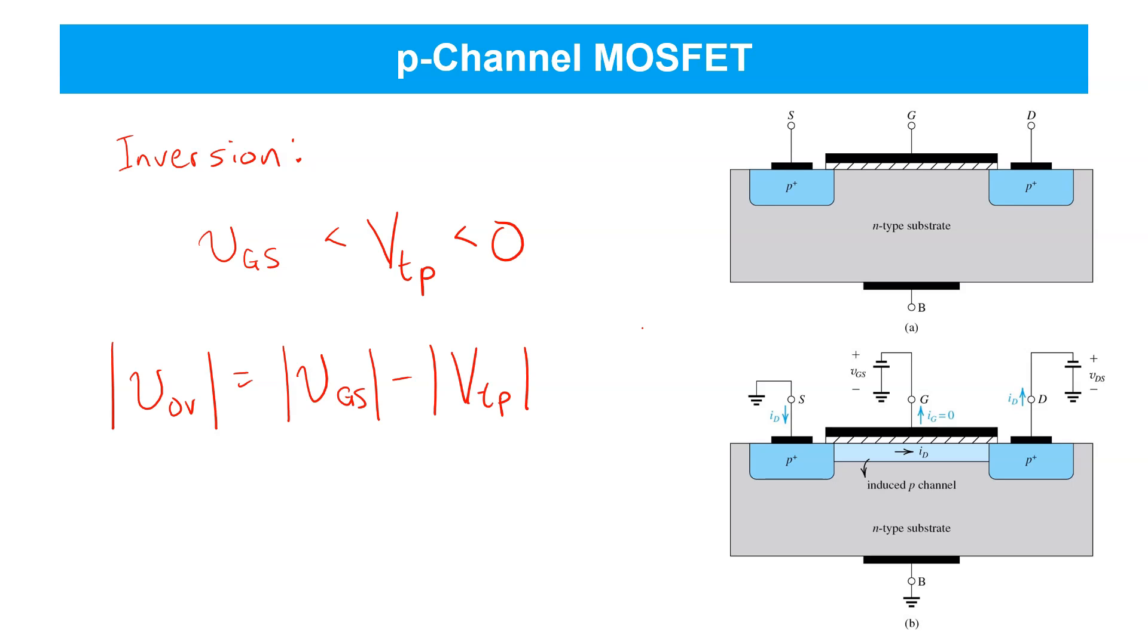When we do this, we just have to be careful to make sure to remember that for PMOS devices, the gate has to be at a lower, more negative voltage than the source to invert the channel so that you don't get the polarities confused.